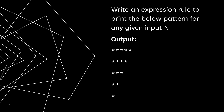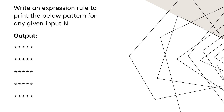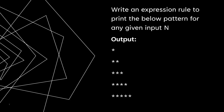Moving on to our next star pattern question: write an expression rule to print the pattern for n equals 5. After that, another star pattern question: write an expression rule to print stars in increasing order — 1 star, then 2 stars, then 3 asterisks, then 4, and so on, where n equals 5.